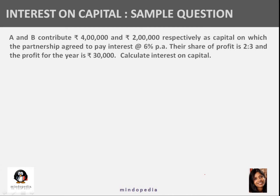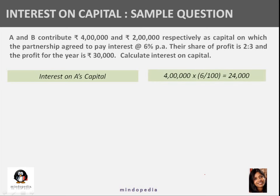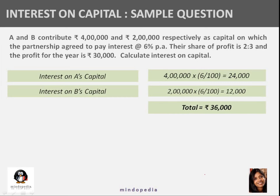Since nothing is given in the question, we assume it is appropriation. A's interest on capital: 4 lakh × 6% = 24,000. Interest on B's capital: 2 lakh × 6% = 12,000. Total interest on capital to be given to the partners = 36,000. But the profit for the year is only 30,000 — so now what should be done?